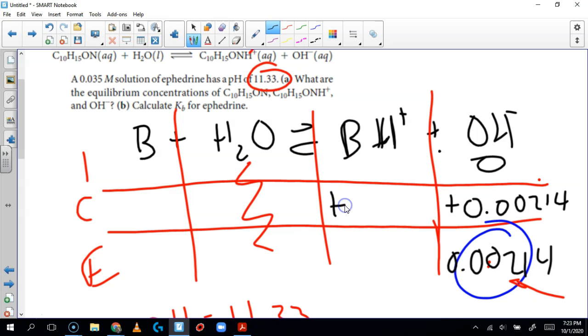So how much does this guy change? Well it changes because of the stoichiometry, it changes by the same amount 0.00214. We started with 0 so that's going to be 0.00214 at the end.